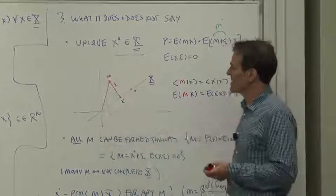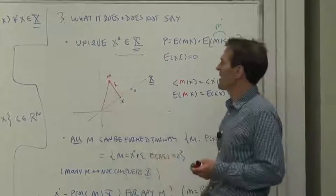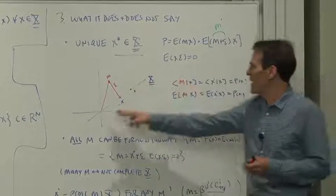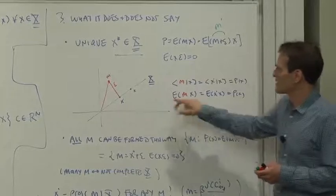But there could be other discount factors. Here's a discount factor M. That generates the same price for all of our payoffs in the payoff space. E of M X,